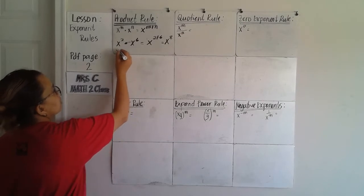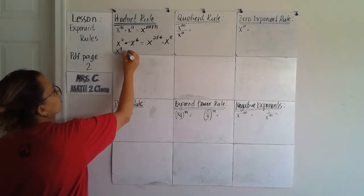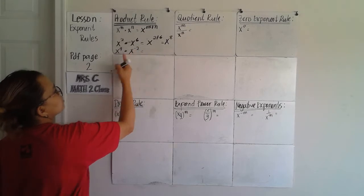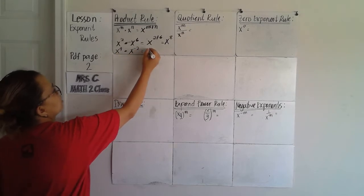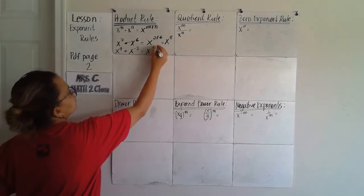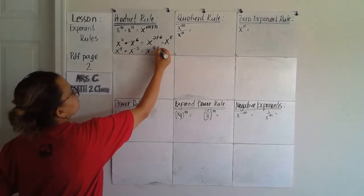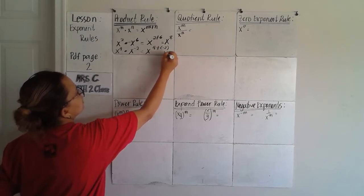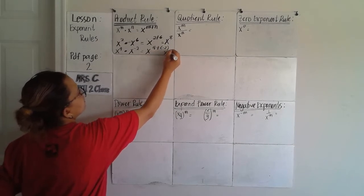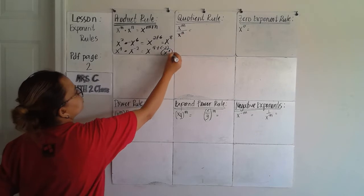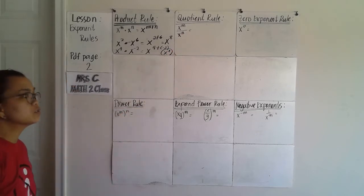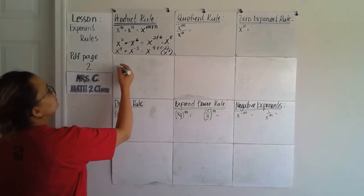Another example: x raised to 4 times x raised to negative 2. So x raised to 4 plus negative 2 is equal to x raised to 2. Does it make sense?